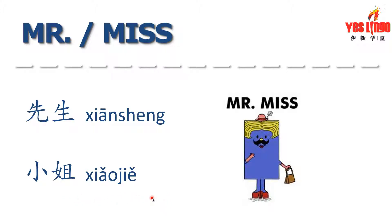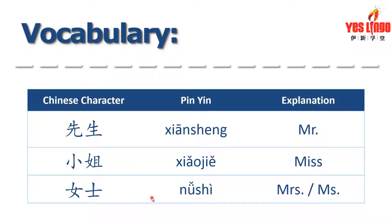To extend on this a bit, let's talk about elder women. For elder women, regardless of their marital status, we use 女士. It can mean Mrs. or Miss. Like I said, in Chinese, we group by age, not by marital status.